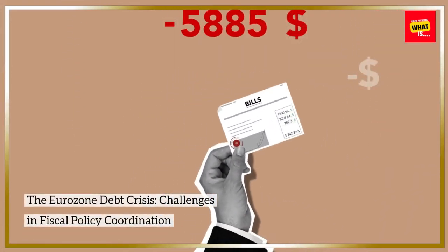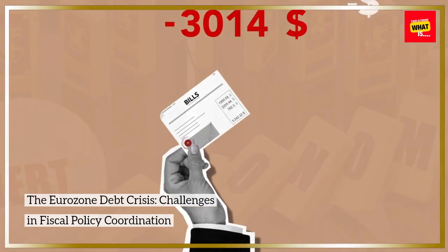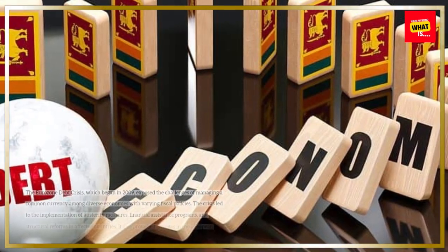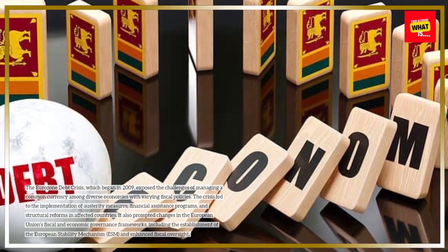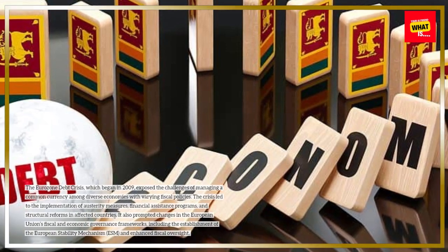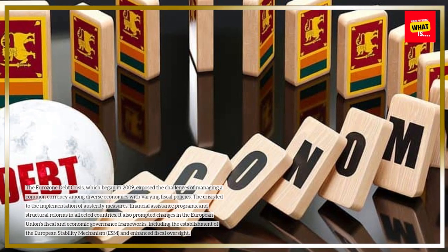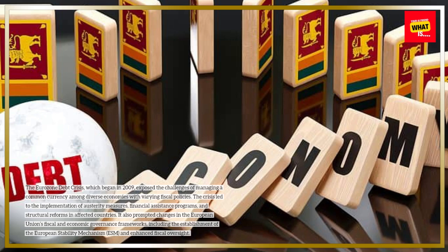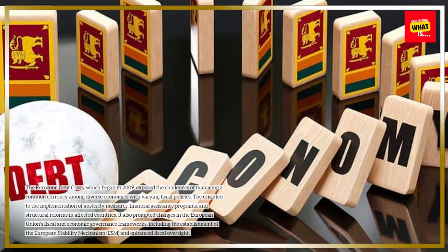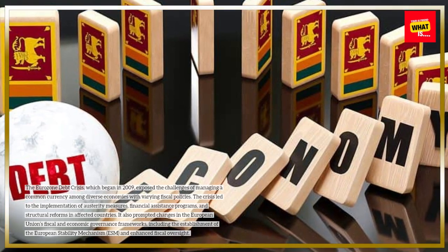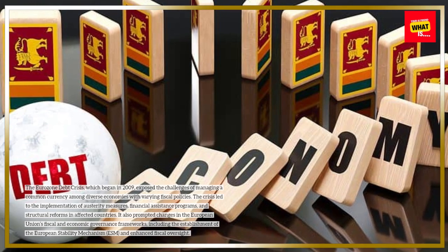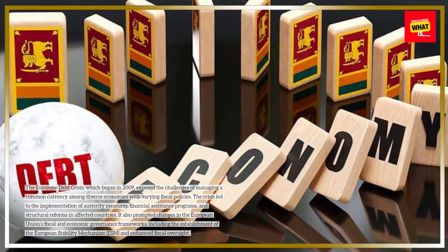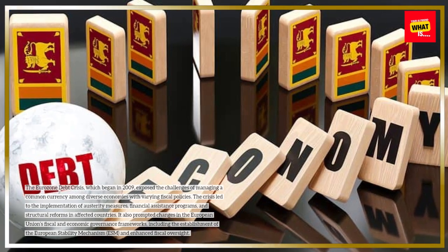The Eurozone Debt Crisis, which began in 2009, exposed the challenges of managing a common currency among diverse economies with varying fiscal policies. The crisis led to the implementation of austerity measures, financial assistance programs, and structural reforms in affected countries. It also prompted changes in the European Union's fiscal and economic governance frameworks, including the establishment of the European Stability Mechanism (ESM) and enhanced fiscal oversight.